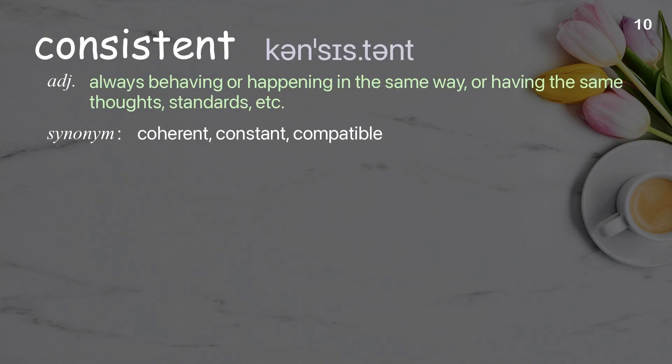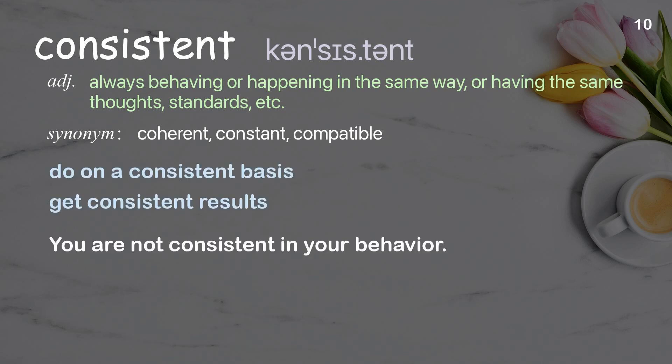Consistent: Always behaving or happening in the same way, or having the same thoughts, standards, etc. Examples: Do on a consistent basis. Get consistent results. You are not consistent in your behavior.